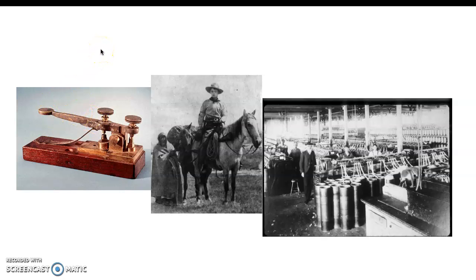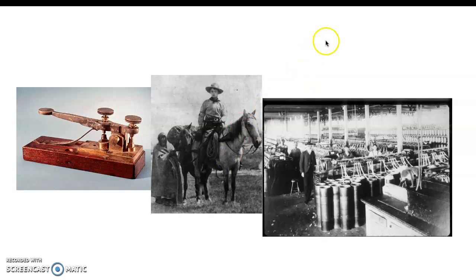The Telegraph used a series of dots and dashes to correspond to letters, to spin down very short messages back and forth. The Pony Express was a system of horses and riders scattered throughout the American West to bring letters back and forth before the Telegraph. It was a very dangerous and very short-lived program.